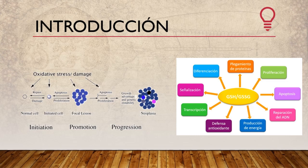Este trabajo consiste en utilizar nanopartículas de quitosán cargadas con glutatión. El quitosán proviene de un polisacárido llamado quitina, que se encuentra en el exoesqueleto de los crustáceos e insectos y es el segundo polisacárido más abundante después de la celulosa. A la quitina se le da un tratamiento básico para generar el quitosán, que es ampliamente utilizado en aplicaciones farmacéuticas y para la fabricación de nanopartículas.